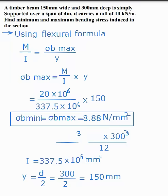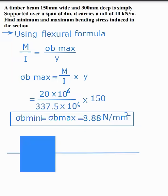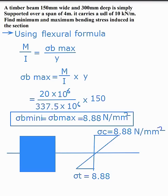Drawing the bending stress diagram for the rectangular section: sigma C equals 8.88 N/mm² and sigma T equals 8.88 N/mm². At the top of the section it is compression, and at the bottom it is tension. Sigma C stands for stress in compression and sigma T stands for stress in tension.